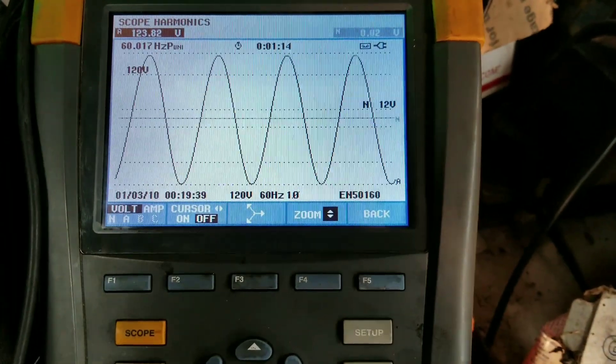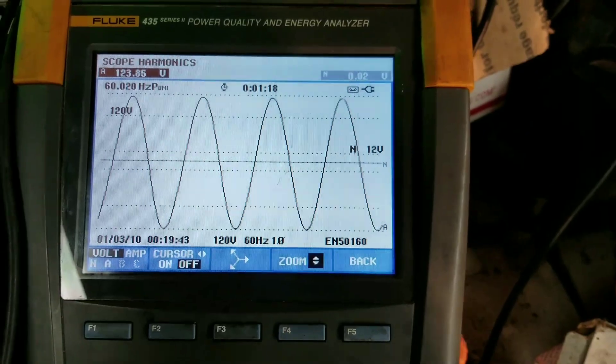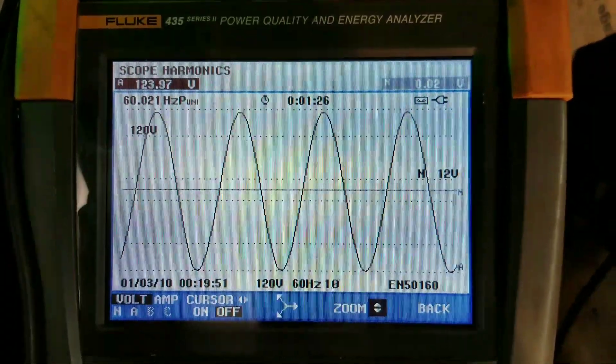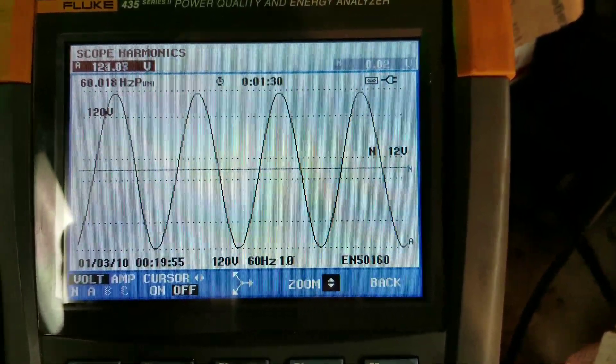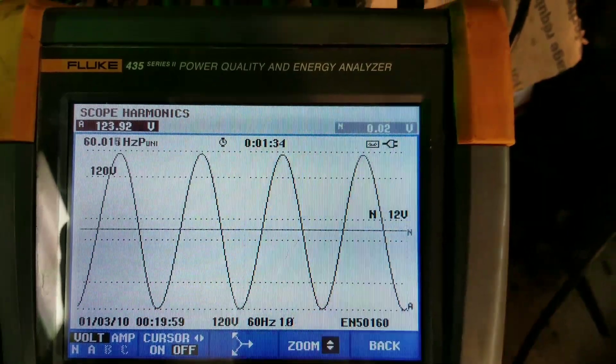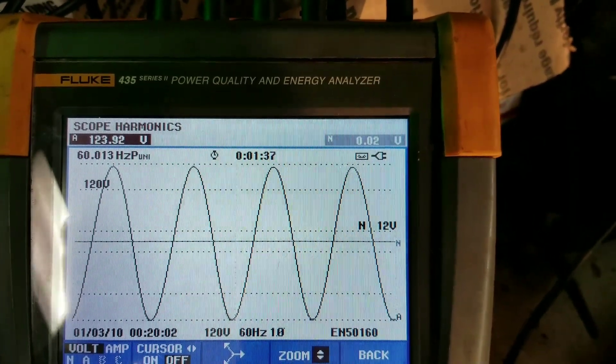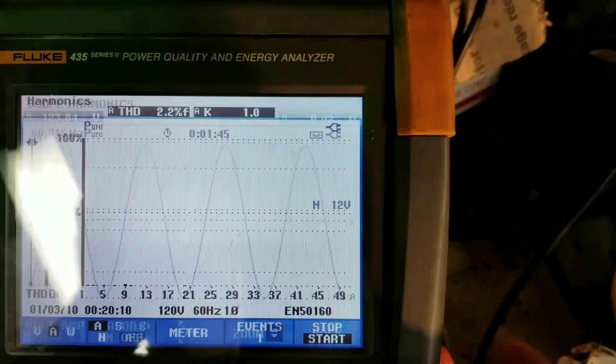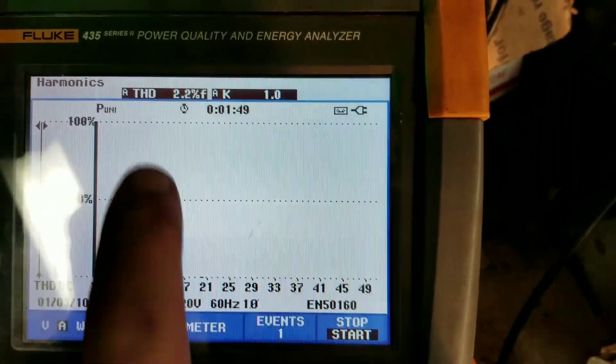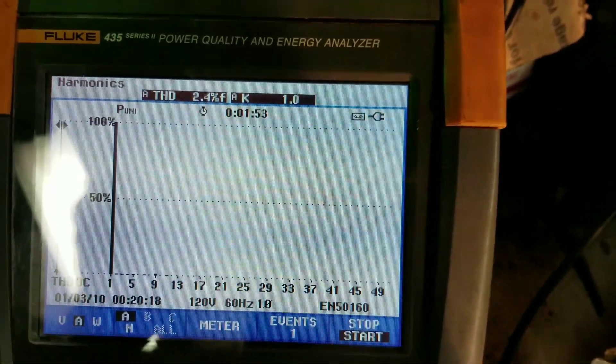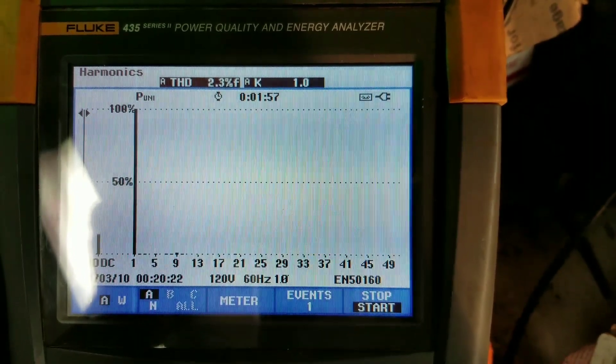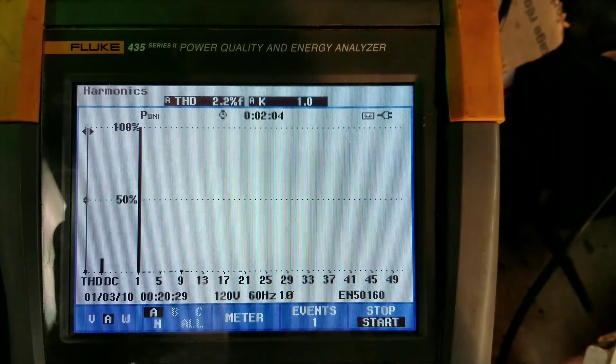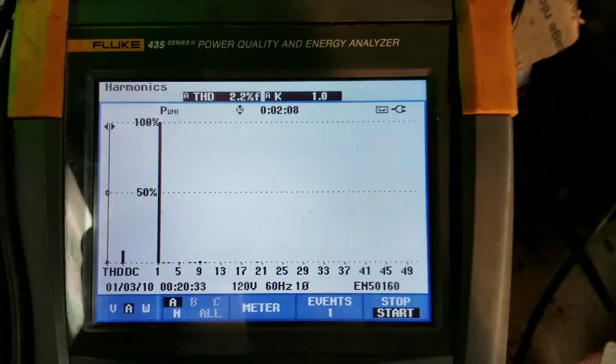Alright, so we're in the shop. Here is the sine wave, the AC sine wave coming off of the Predator. We're on echo mode right now. That's pretty damn good, I must say. Let's go back to, so here's the total harmonics of it right now, 2.3 percent. 2.2 percent total harmonic distortion. I've seen worse.